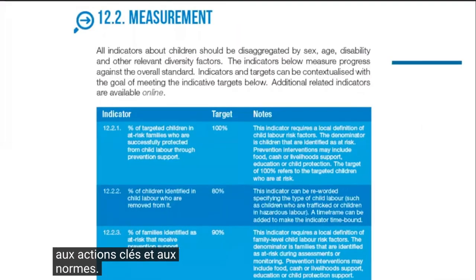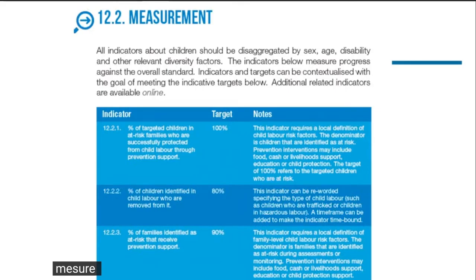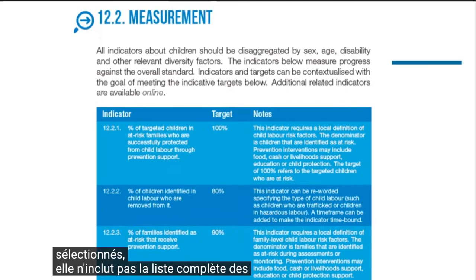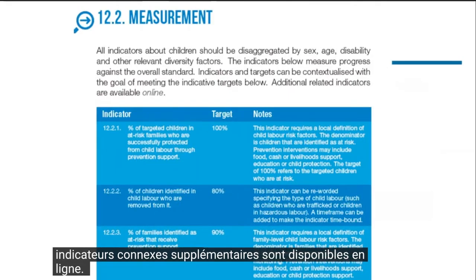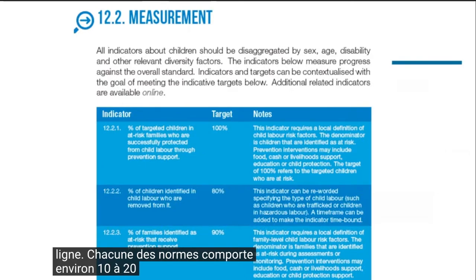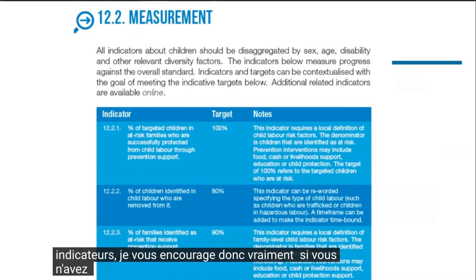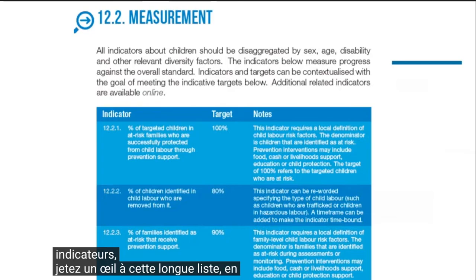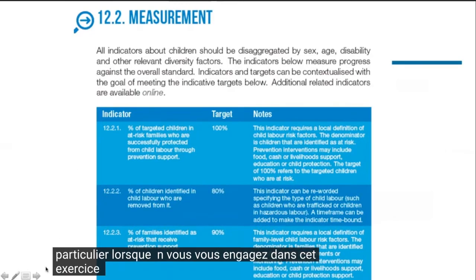As many of you will have seen, this is a screenshot from the Child Protection Minimum Standards itself. In each standard, there is a section on measurement which includes a few priority indicators that were selected. It doesn't include the entire list of indicators, but the additional related indicators are available online. Each standard has approximately 10 to 20 indicators, so I would really encourage you, if you haven't seen that longer list, to take a look through it, especially when you're engaging in this contextualization exercise.